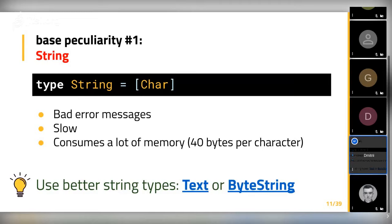The solution to this problem is to avoid using String and use better string types. Fortunately, there are better string types in the Haskell ecosystem, like Text or ByteString, provided in the corresponding packages also called text and bytestring. If you're aware that String is not fast, you can just switch to other string types.